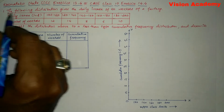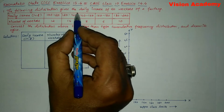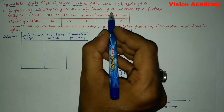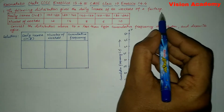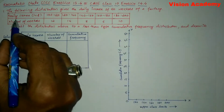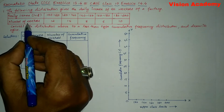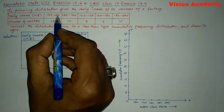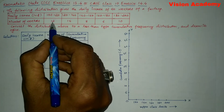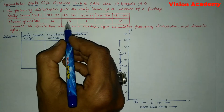Question number one: the following distribution gives the daily income of 50 workers of a factory. Daily income in rupees and number of workers: 100 to 120 is 12, and 120 to 140 is 14.